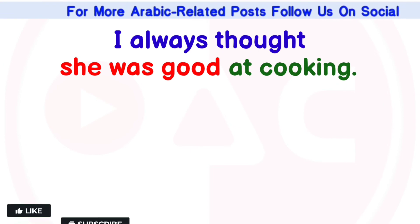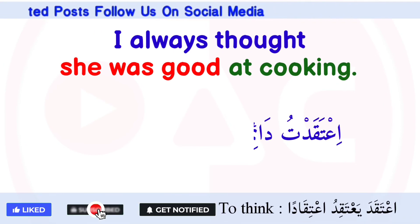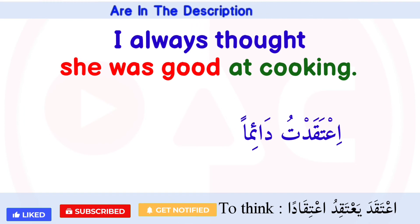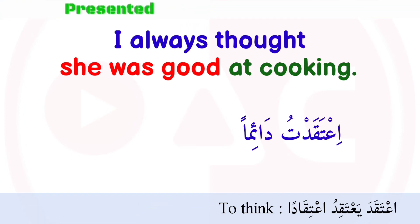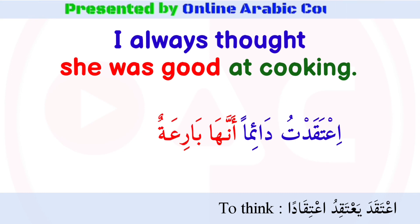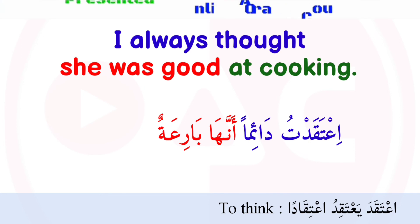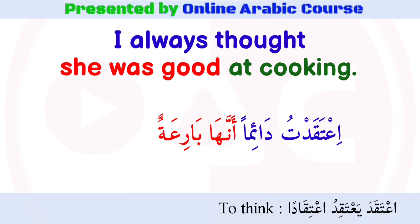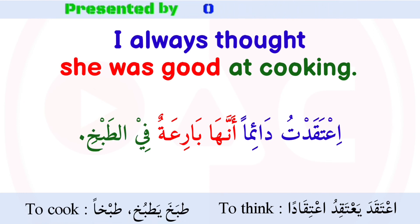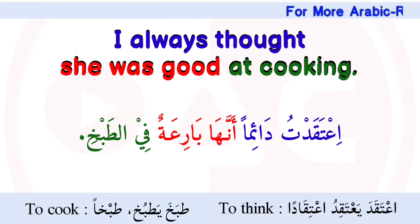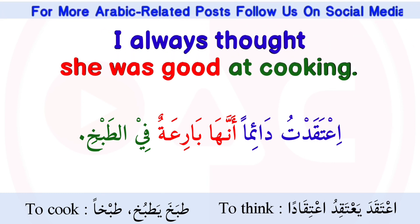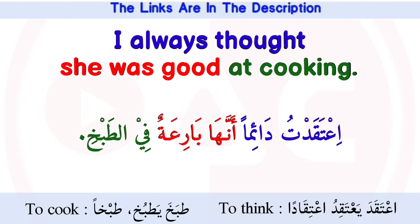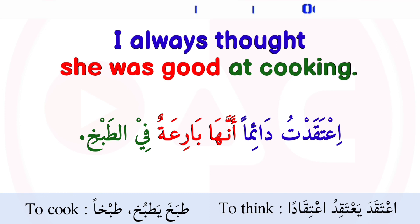The third example is: 'I always thought she was good at cooking.' In Arabic: i'taqadtu da'iman annaha bari'ah fi al-tabkhi — 'I always thought she was good at cooking.' I hope you understood the lesson well.